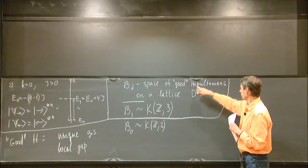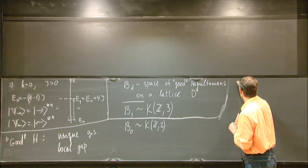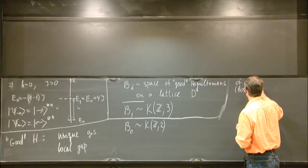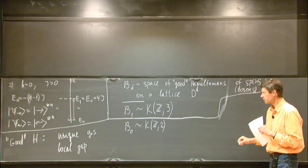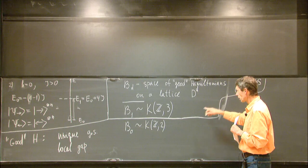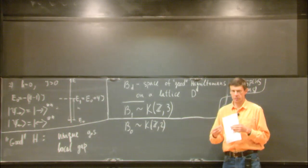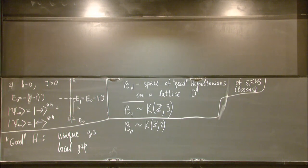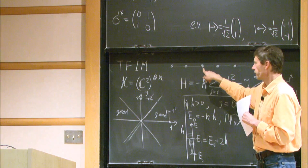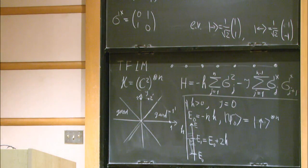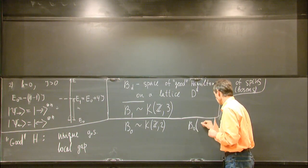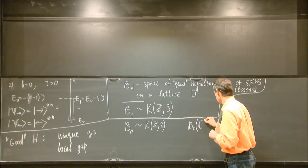And I'll not explain that. But let me explain the easier version. B0 will be homotopy equivalent to the Eilenberg-MacLane space K(Z,2). This is good Hamiltonians of spins or bosons. And later, we'll consider fermionic Hamiltonians. So what is B0? It's a zero-dimensional system. And all these locality conditions are not important. Here, it was important that only neighbors can talk with each other.